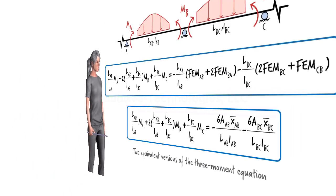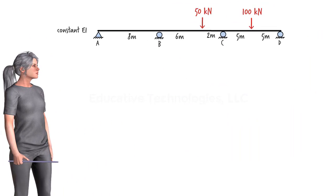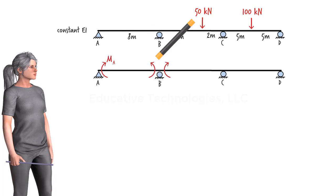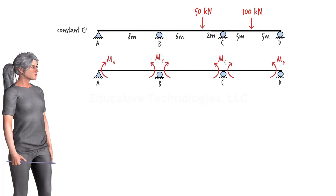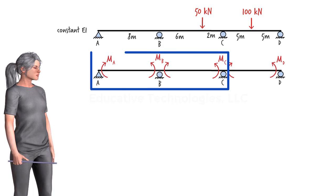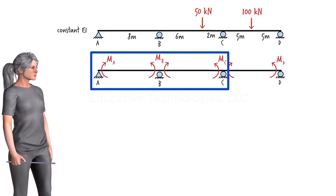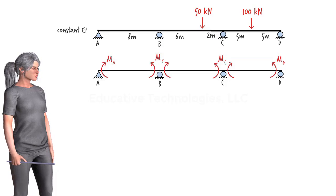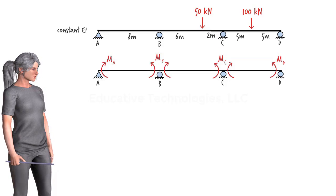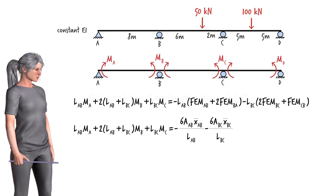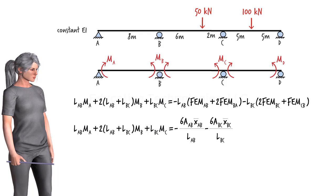Let's go through another example problem: a continuous beam subjected to two concentrated loads. Since there are four support points dividing the beam into three spans, we need to write two equations — one for relating MA, MB, and MC, and another for relating MB, MC, and MD. To write the three-moment equations, we can use either formula. To convince you that either formula works, I'm going to use both of them.